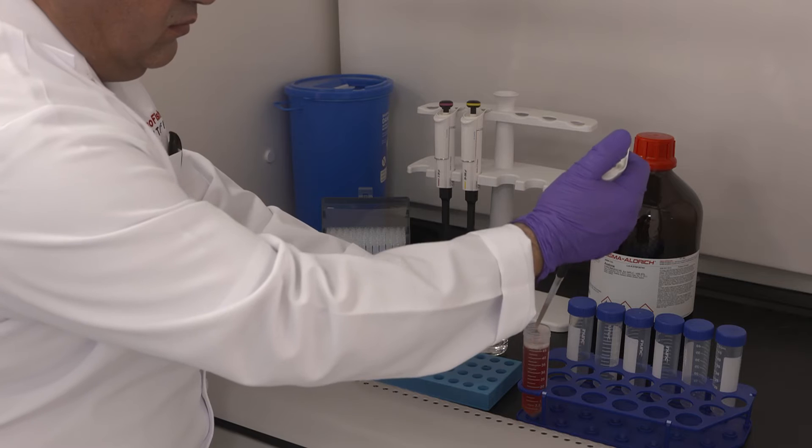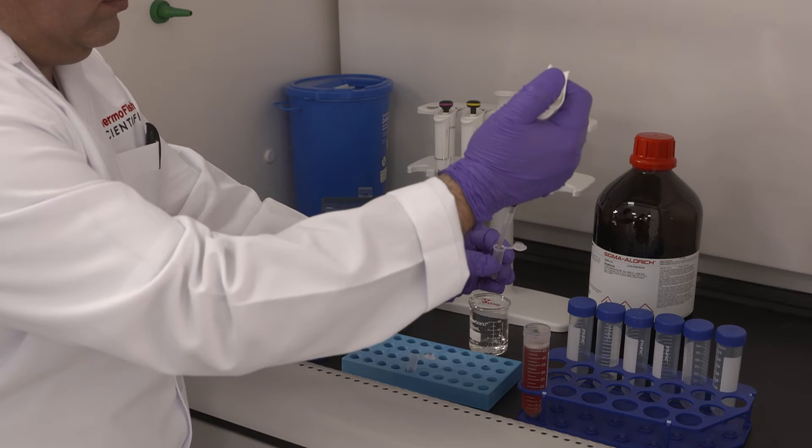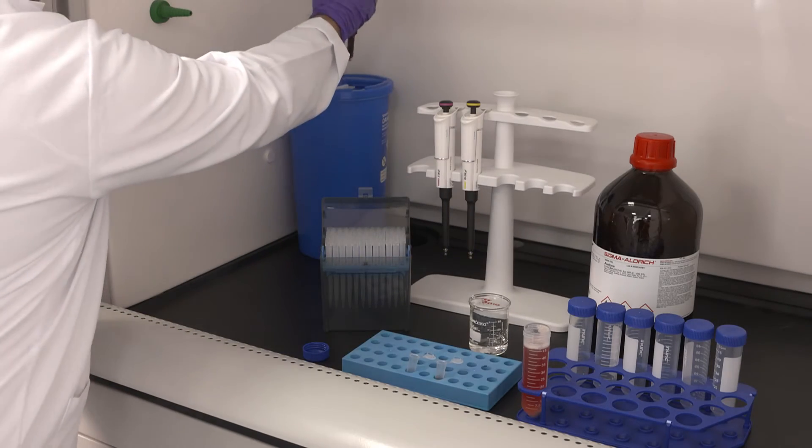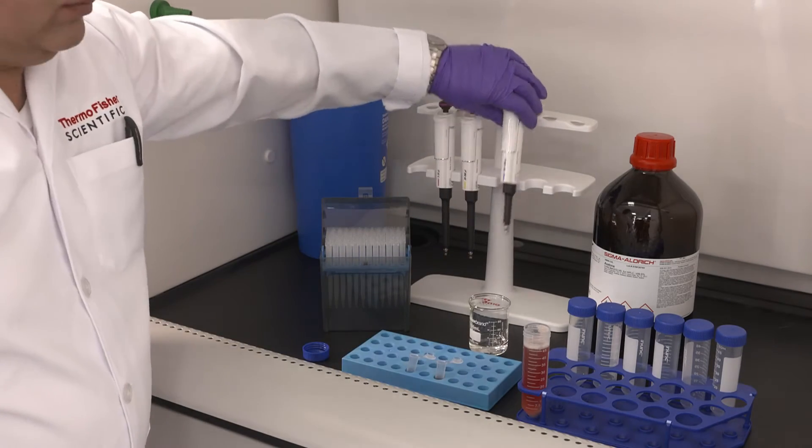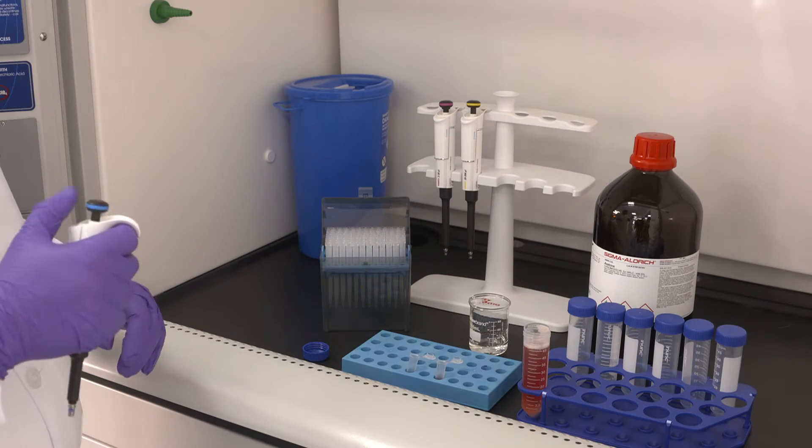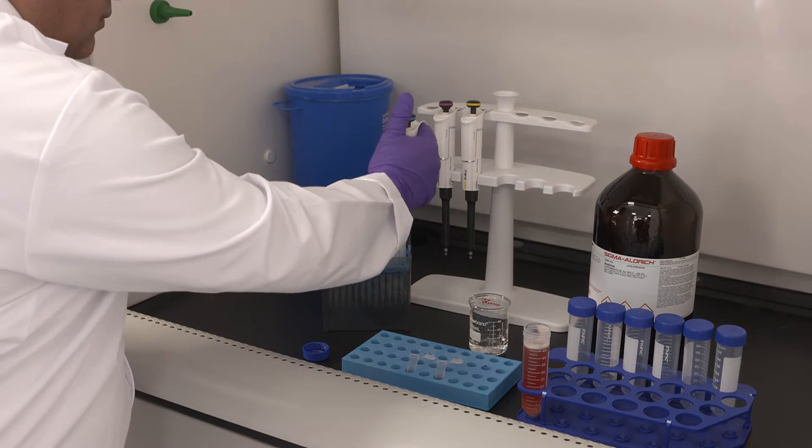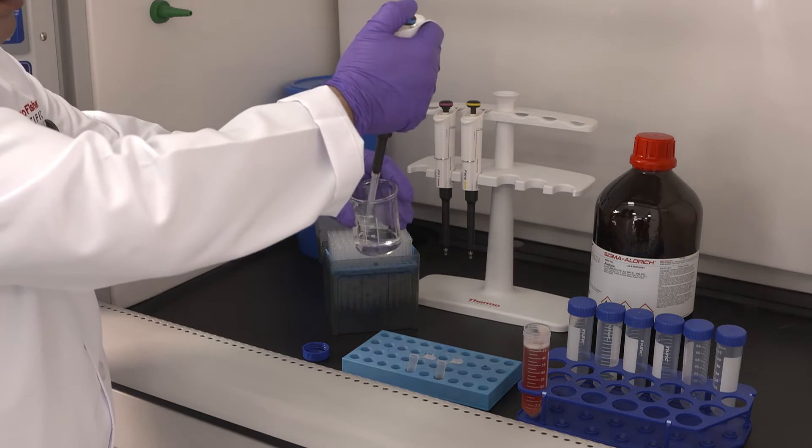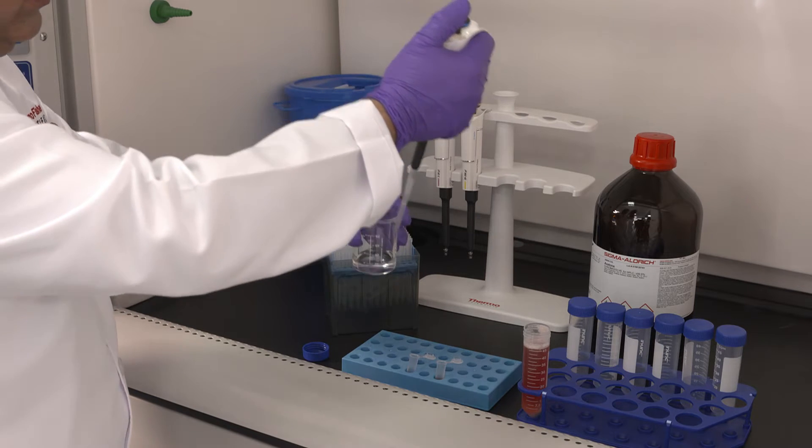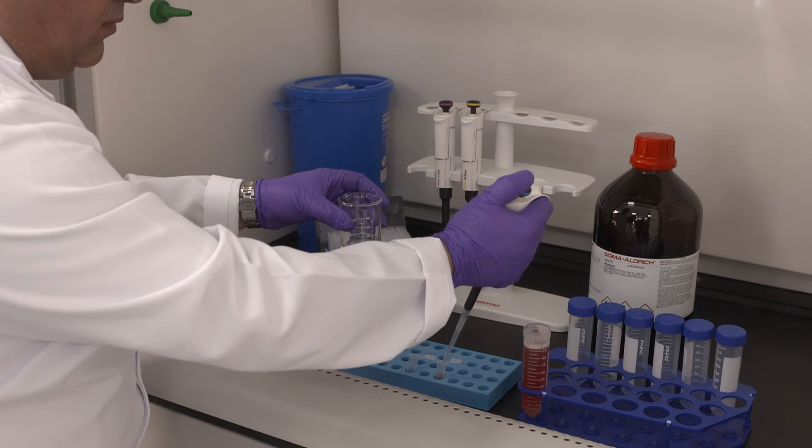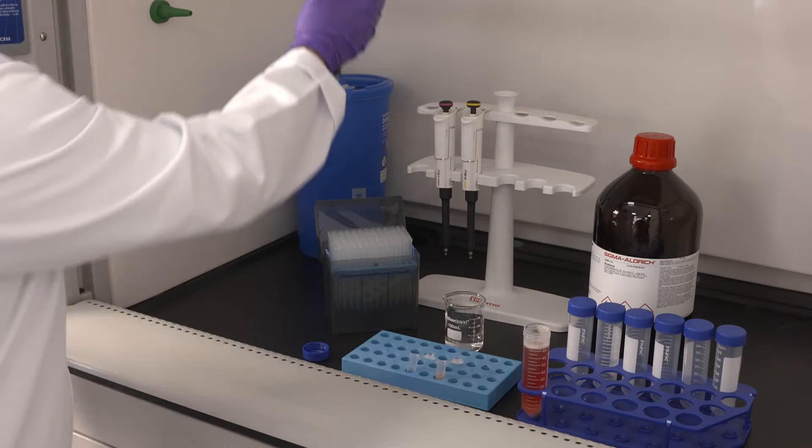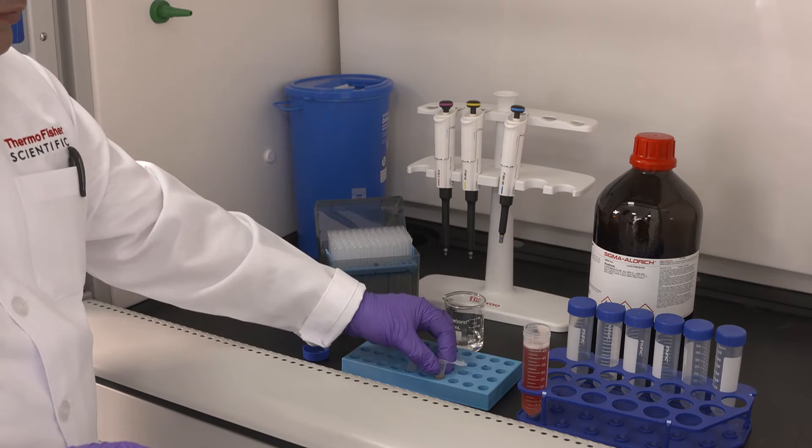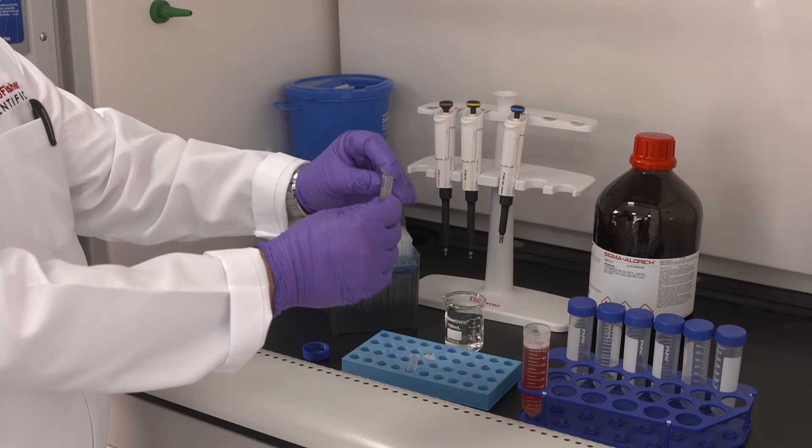The supernatant contains proteins that we will extract using acetone. 500 microliters of the supernatant were taken. Now we will add 500 microliters of acetone so protein will precipitate. Acetone will also extract excessive fat that can be present in the mixture.